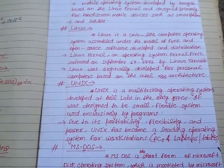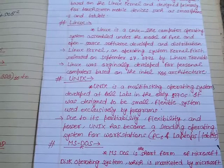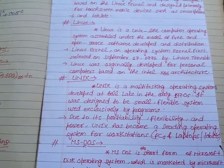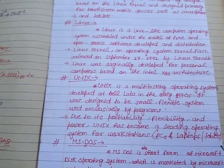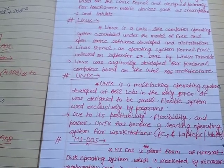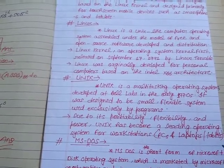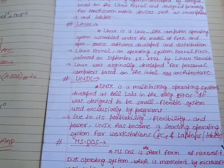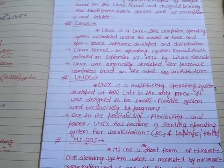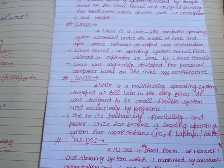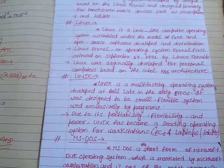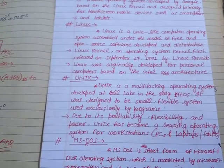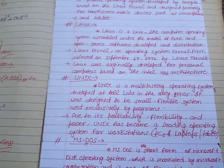Now, Unix operating system. Unix is a multitasking operating system, meaning multiple tasks can be executed at the same time. Unix was developed at Bell Laboratory in the early 1970s. It was designed to be a small, flexible system which is basically used for executing small programs. Due to its portability — portability means the ability to run on different platforms — and flexibility and power, Unix became the leading operating system for workstations, meaning PCs, personal computers, laptops, and tablets.